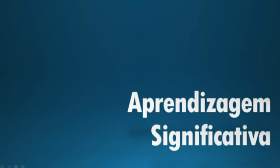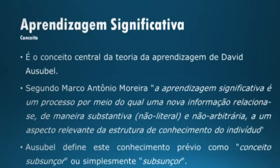Aprendizagem significativa é o conceito central da teoria da aprendizagem de David Ausubel. Segundo Marco Antônio Moreira, a aprendizagem significativa é um processo por meio do qual uma nova informação relaciona-se, de maneira substantiva, não literal e não arbitrária, a um aspecto relevante da estrutura de conhecimento do indivíduo. Ausubel define este conhecimento prévio como conceito subsunçor, ou simplesmente subsunçor.